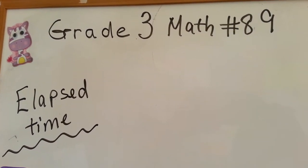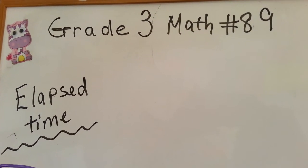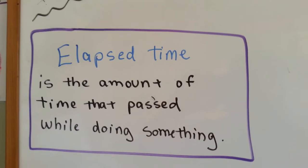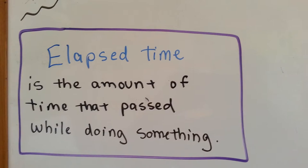Grade 3 math, number 89. Elapsed time. Elapsed time is the amount of time that passed while doing something.